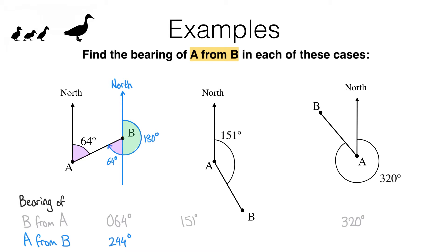In the next example, we can do the same kind of thing. We are looking for the bearing of A from B. So we need a north line at B, like this. Turning clockwise until we face A,